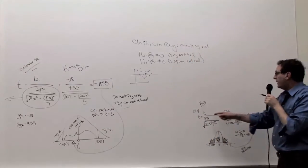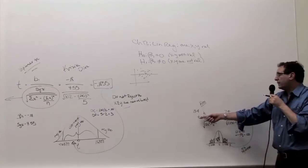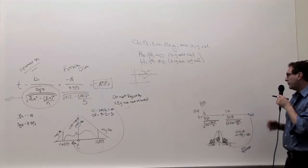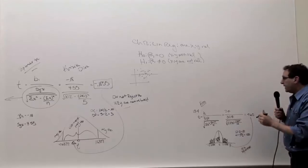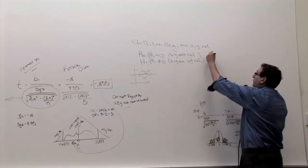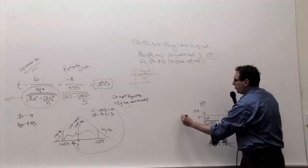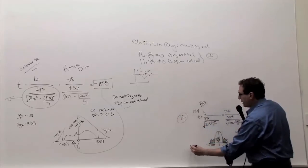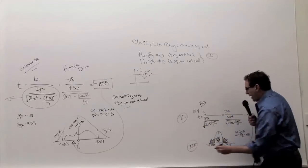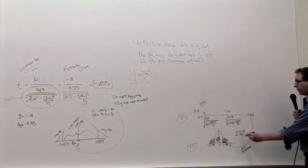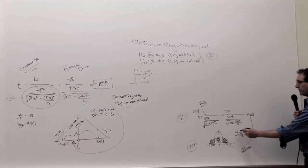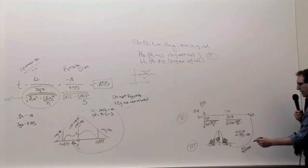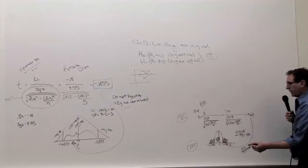Step number two is to calculate the t, called a t-statistic, b1 over syx, which we talked about last time. This is step number one, this is step number two, doing a calculation. Step number three is coming up with some diagram with the boundary based on the alpha, which in this case we chop in half, the degree of freedom is n minus two. And if you look up in the t-table, you get this number here.